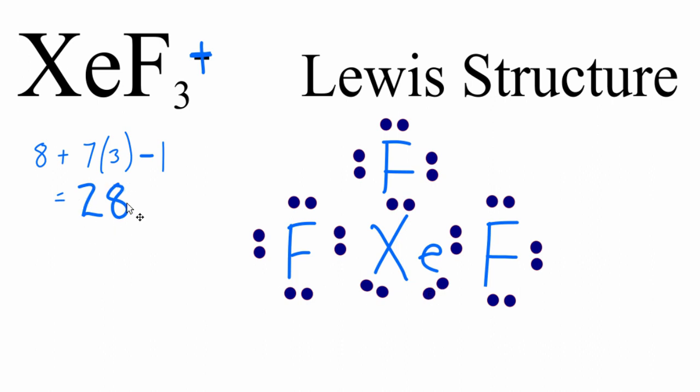We've used all 28 valence electrons for the XeF3+. That's the Lewis structure. This is Dr. B, and thanks for watching.